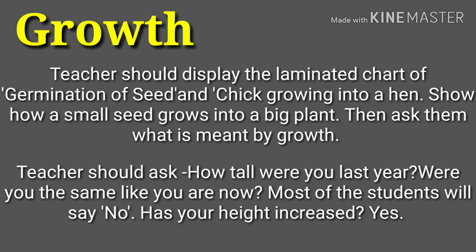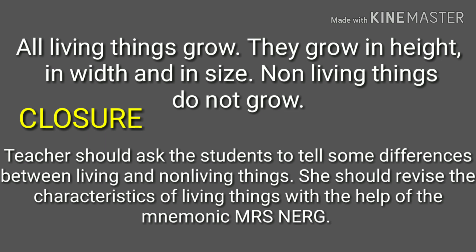The last characteristic is growth. The teacher should display a laminated chart of the germination of a seed and a chick growing into a hen, and show how a small seed grows into a big plant. The accepted answer for growth is: growth is an increase in height, size, and width of an organism. The teacher should ask students how tall they were last year compared to now, leading them to understand that all living things grow in height, width, and size, while non-living things do not grow.